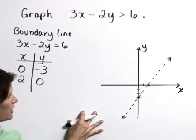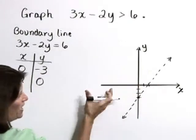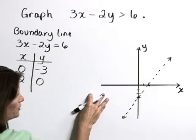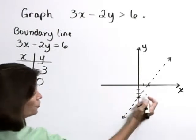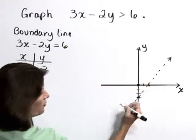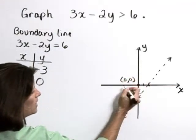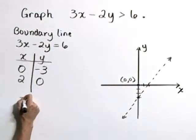Next, we need to determine which side of this line to shade to represent our solution region. So choose a point that is clearly off that boundary line, such as the origin, and let's use it as a test point.